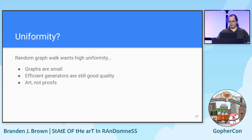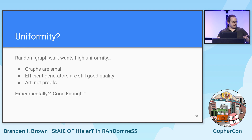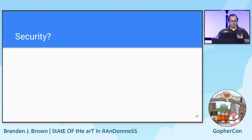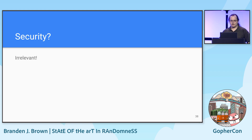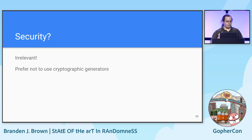So it's worth experimenting with PCG versus Mersenne Twister, and we find that it's visually indistinguishable. Do we care about security or unpredictability? No. Xero is not a cryptographic application, so I prefer not to use a cryptographic primitive.